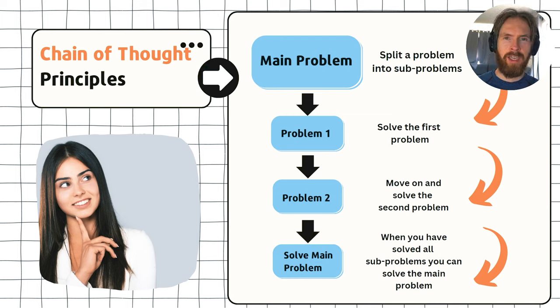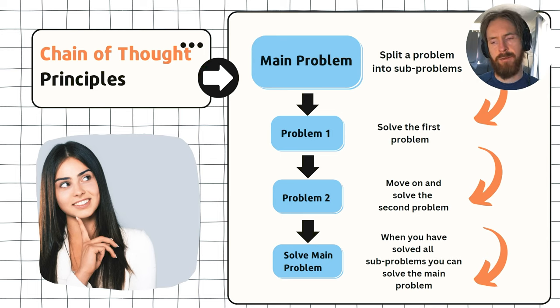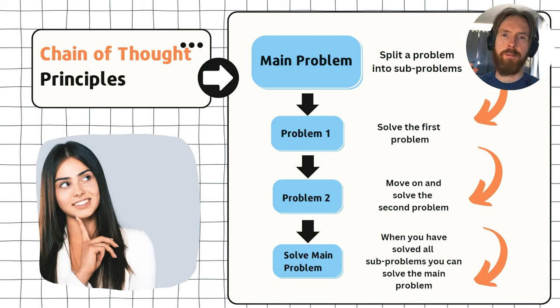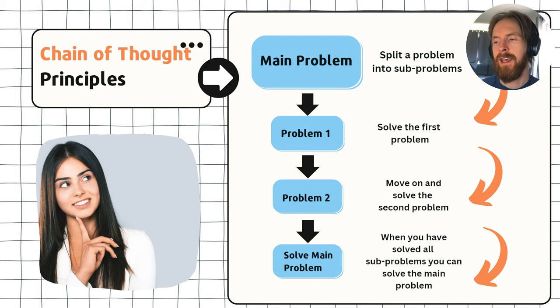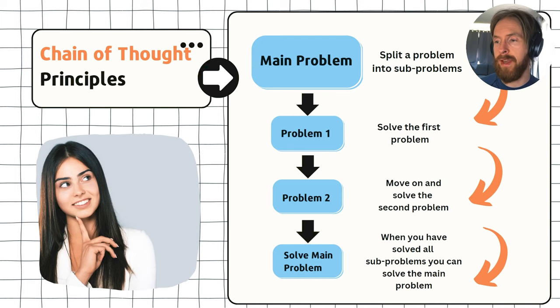This might seem a bit weird, but if you think about it, this is how humans solve problems too. We don't just look at the last sentence in the problem and say it has to be that. We have to go through each step and solve it like in a chain. And you will see that clearly when we move on to our example.